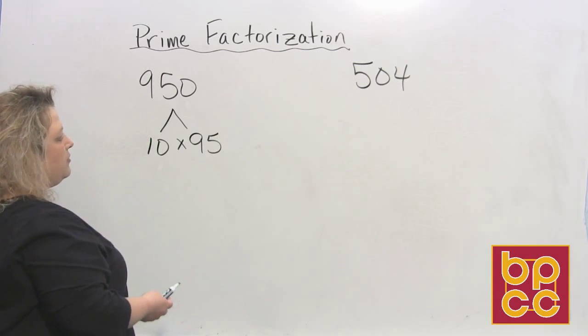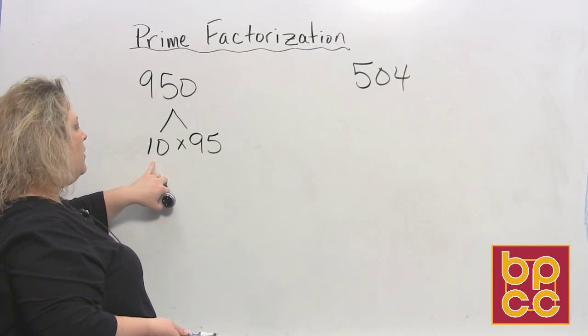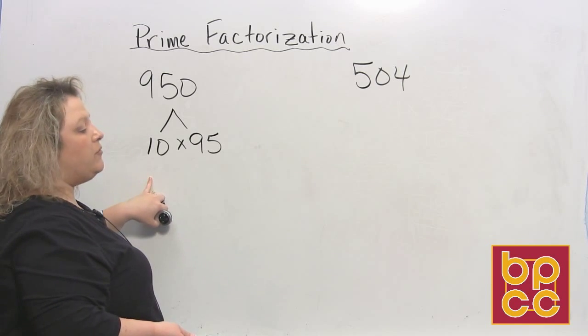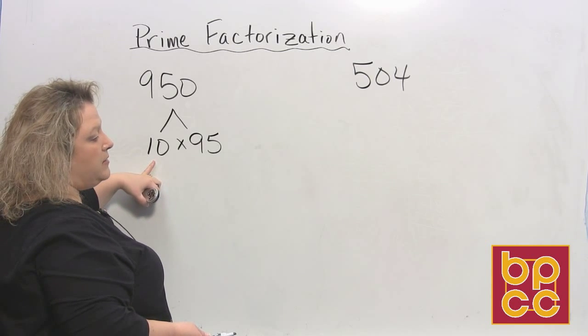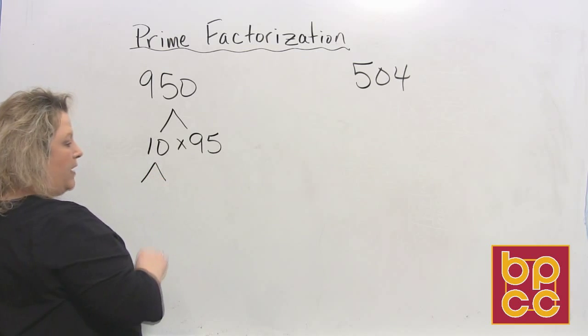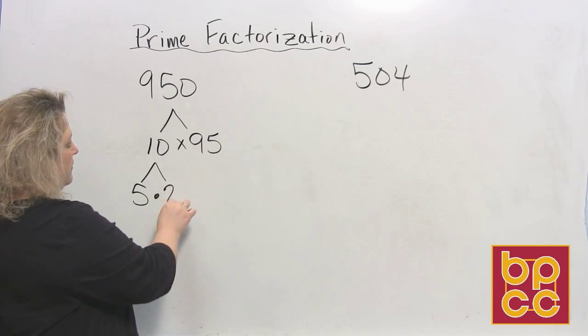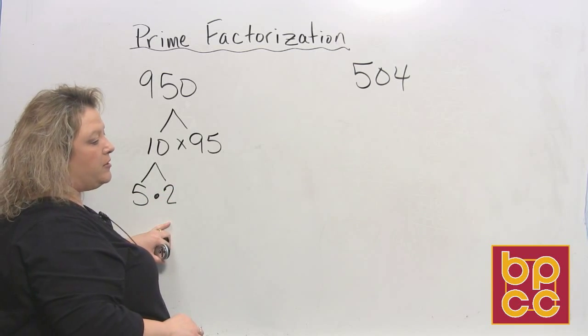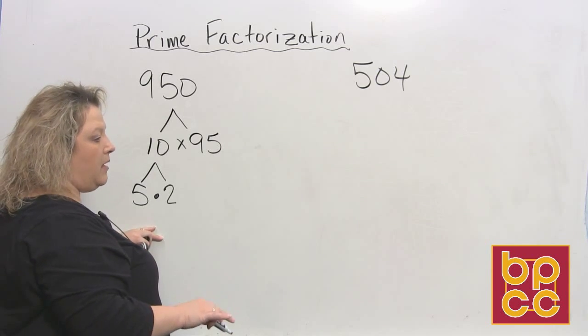Does anything else divide into this? Well one of the rules said if the number ends in five or zero then five will divide into it. This ends in a zero so therefore five will divide into ten. Five divides into ten two times, so that would be five times two gives me ten. Now five and two are both prime numbers so I have to stop there. Once you reach a prime number you stop.